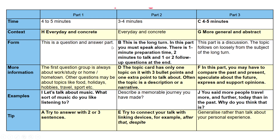You had to fill in the blanks and here are the answers. For context in part one, it's 'everyday and concrete' — similar to part two, and that's absolutely fine. For more information, this is a question-and-answer part. The first question group is always about work, study, or hometown. An example given is: 'Let's talk about music — what sort of music do you like listening to?' It can be about music, movies, weather, and many other things.